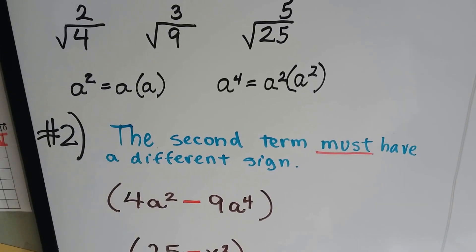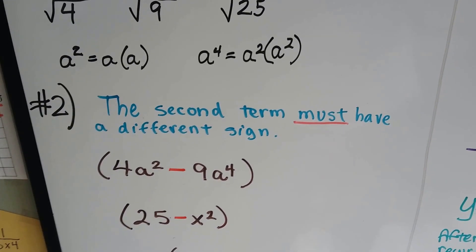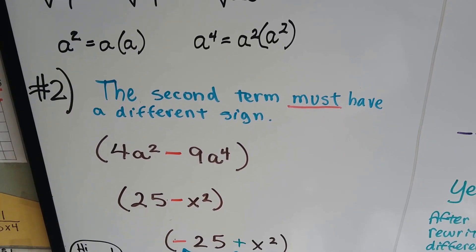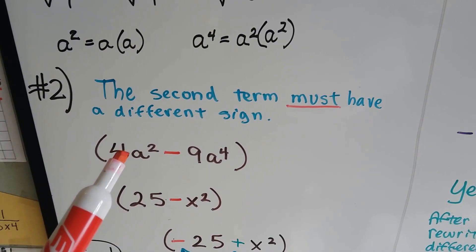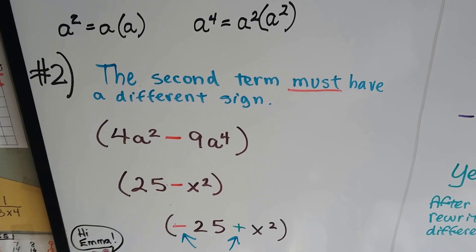The second thing that it must have, the second condition is that the second term must have a different sign than the first term. So here's a positive 4a squared and then we have a minus 9a to the fourth. So that one works.